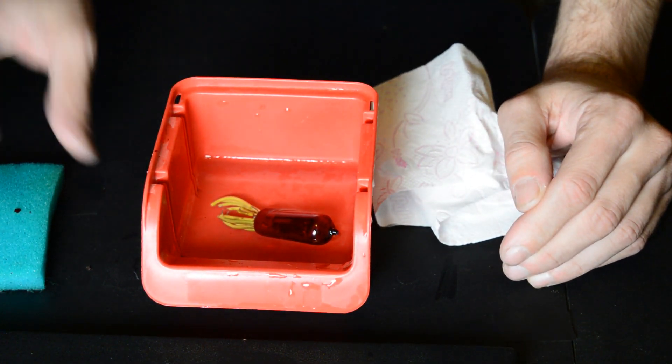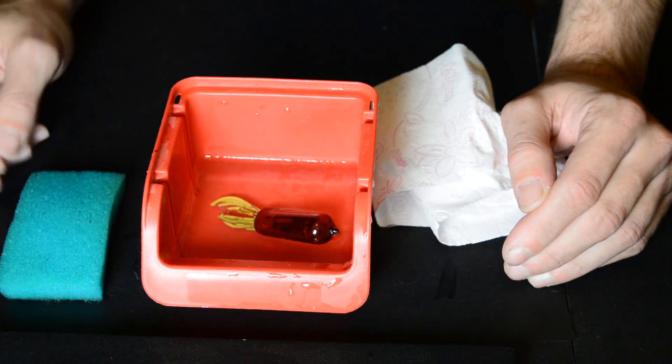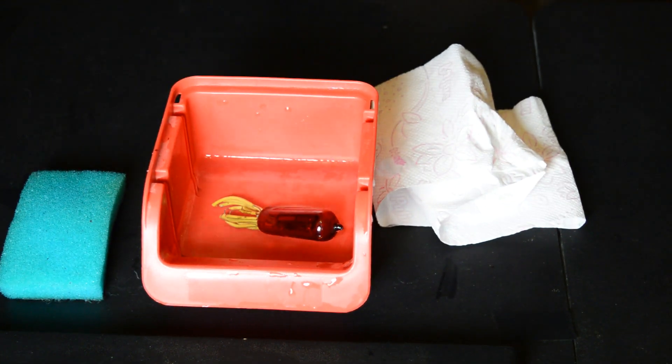And then the paint can be chipped off using your hands, your nails, and a simple kitchen sponge. So that's what we're going to do.